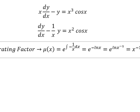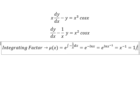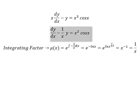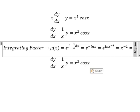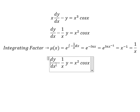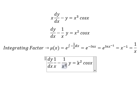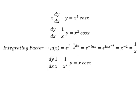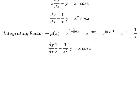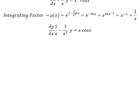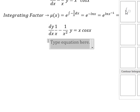So we have x to the power of negative one, which is 1 over x. Next, we multiply both sides by 1 over x, and I will apply the integrating factor to both sides.